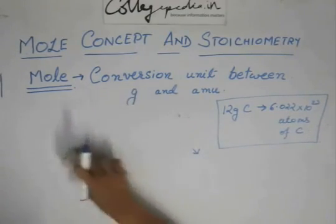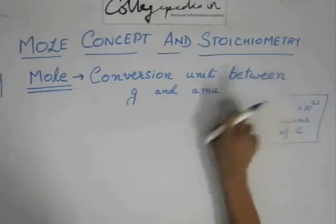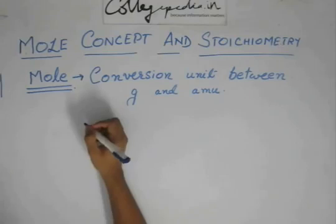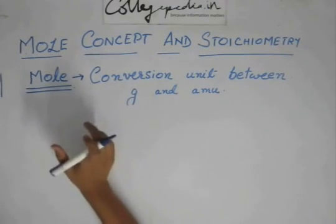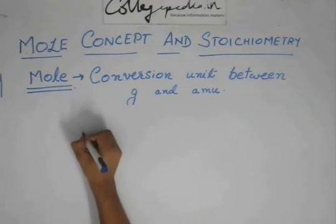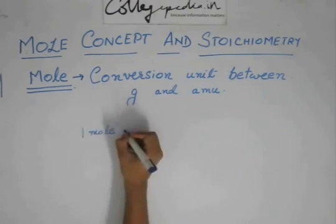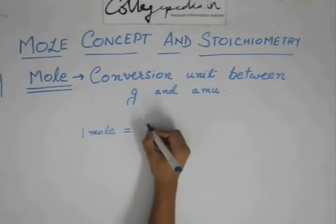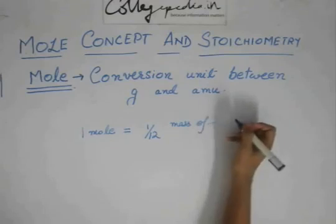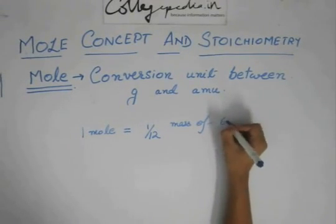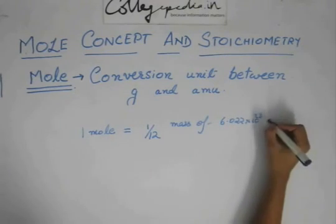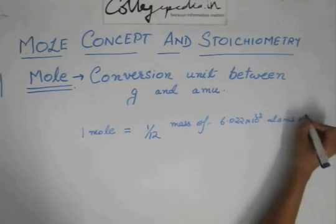We have taken this quantity because we are using carbon for the definition of mole. It says that 1 mole is equal to 1 twelfth the mass of 6.022 × 10²³ atoms of carbon.